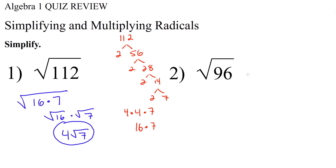For number 2, we need to simplify radical 96. Once again, if you do not know the factors, you can divide or you can do prime factorization. I'm going to show you prime factorization here just one more time.